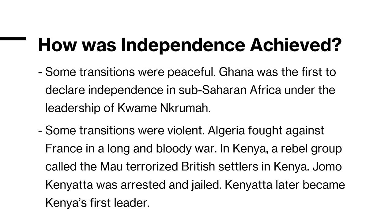Some transitions were peaceful. Ghana was the first to declare independence in Sub-Saharan Africa under the leadership of Kwame Nkrumah. Some transitions were violent — Algeria fought against France in a long and bloody war. In Kenya, a rebel group called the Mau Mau terrorized British settlers. Jomo Kenyatta was arrested and jailed, but Kenyatta later became the first president of Kenya.